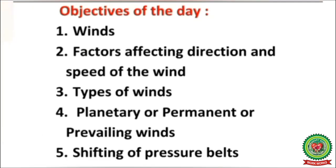The objectives of today's class are: number one, winds; number two, factors affecting direction and speed of the wind; number three, types of winds; number four, planetary or permanent or prevailing winds; and number five, shifting of pressure belts.